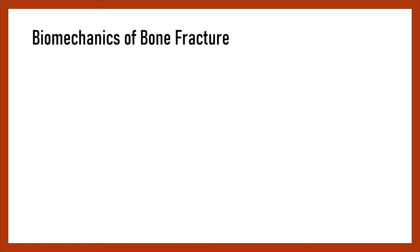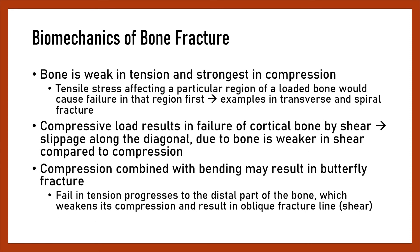Biomechanics of bone fracture: Bone is weak in tension and strongest in compression. Tensile stress affecting a particular region of a loaded bone would cause failure in that region first — for example, in transverse and spiral fractures. Compressive load results in failure of cortical bone by shear, with slippage along the diagonal, as bone is weaker in shear compared to compression. Compression combined with bending may result in a butterfly fracture, where failure in tension progresses to the distal part of the bone, weakening it in compression and resulting in an oblique fracture line or shear.